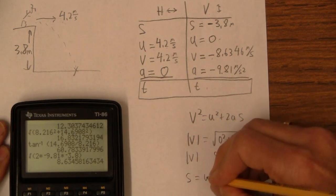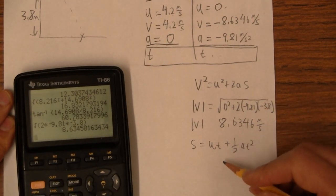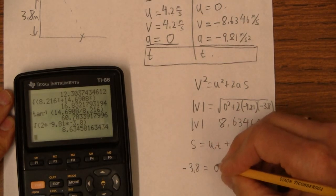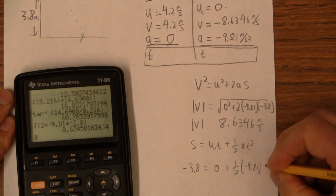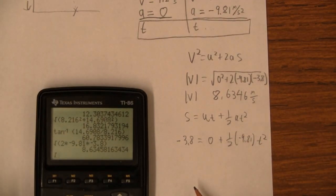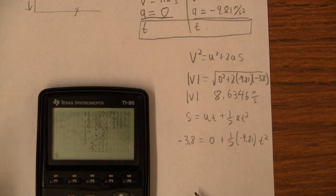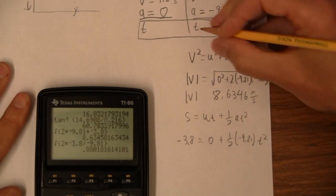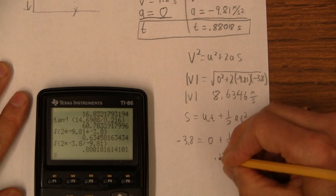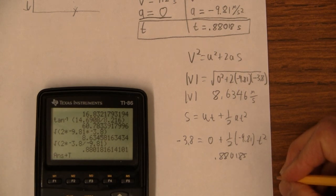Now I can find time. I'm going to use S equals UT plus 1 half AT squared to find time. I could use any formula to find time, but I'm going to use that one. So that negative 3.8 equals 0 plus 1 half negative 9.81 times T squared. So my T is going to be the square root of 2 times negative 3.8 divided by negative 9.81. So my T is going to be the square root of 0.88018. Okay, did I do that right? I did. I'm going to store that in my variable T just for fun.